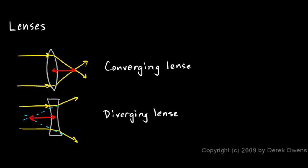It basically depends on the curvature — how much the glass is curved. A converging lens is sometimes referred to as a convex lens because its shape is convex. And a diverging lens is sometimes referred to as a concave lens because its shape is concave.